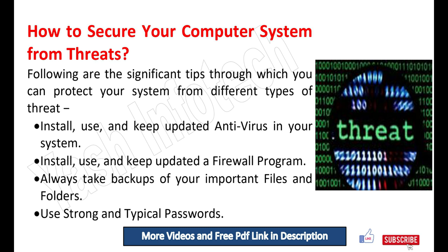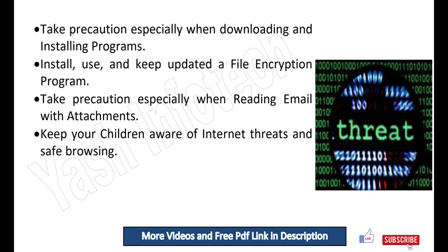How to secure your computer system from threats. Following are significant tips through which you can protect your system from different types of threats: install, use, and keep updated antivirus on your system; install, use, and keep updated a firewall program; always take backups of your important files and folders; use strong and complex passwords; take precaution especially when downloading and installing programs; install, use, and keep updated a file encryption program; take precaution especially when reading emails with attachments; keep your children aware of internet threats and safe browsing.